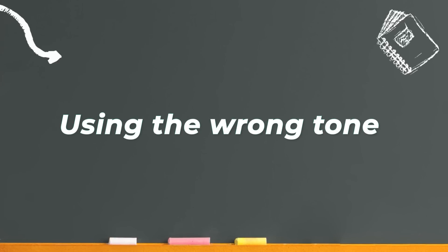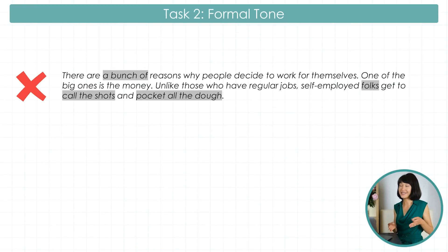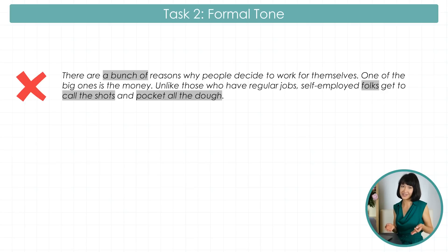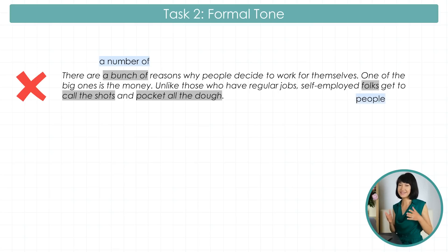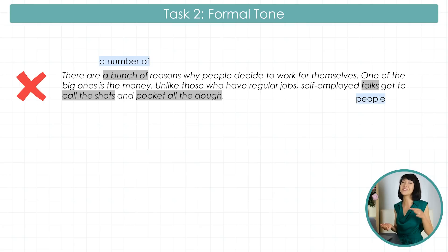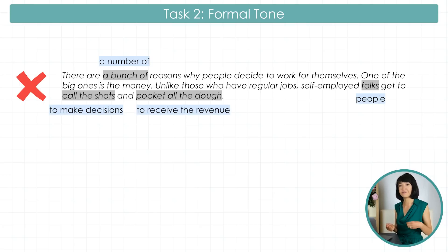Using the wrong tone. In task 2, no matter the IELTS version you are taking, keep it formal. Avoid slang and informal words like 'a bunch of folks' – say 'a number of people.' Similarly, avoid idioms. 'To call the shots' or 'to pocket the dough' are very informal. Say 'to make decisions' or 'to receive the revenue' instead.